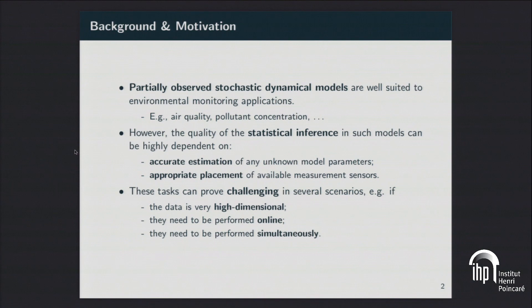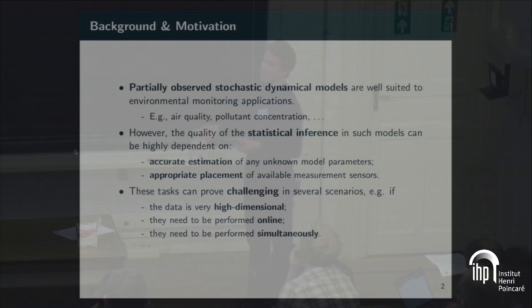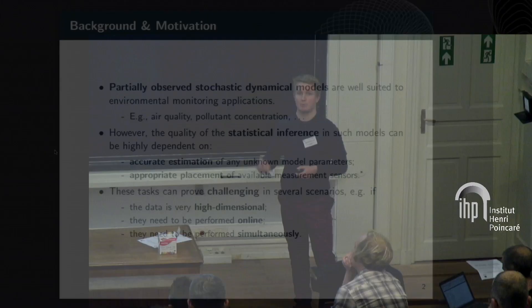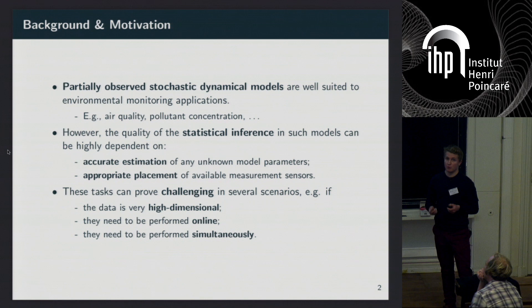We're particularly interested in applying partially observed stochastic dynamical models in environmental monitoring applications — think of modelling something like air quality or pollutant concentration. We typically have some idea of the underlying process and we have some noisy measurements of that process. However, the quality of statistical inference — so filtering, prediction, estimation, and so forth — are often highly dependent on our ability to accurately estimate parameters in our model and also to appropriately place any measurement sensors which we have available.